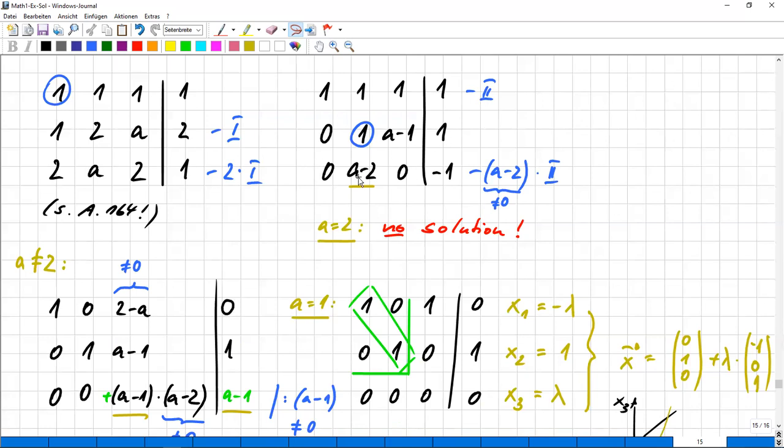Now to the third row, which is by this condition, not containing a zero here. So I must eliminate. And this is a little bit tricky because I have to take the, well, I have to subtract the A minus two.